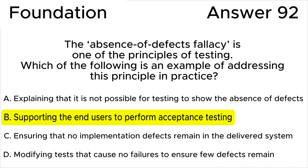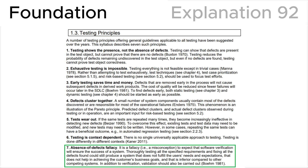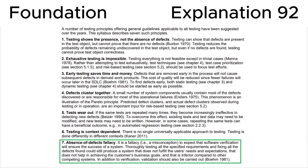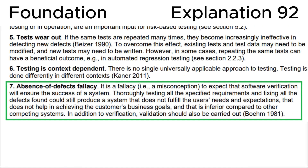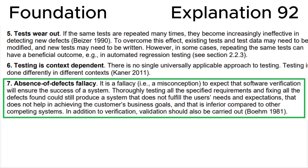My recommendation: please figure out all seven principles with examples and don't mix them up. Finally, let's look at section 1.3 'Testing Principles' in the ISTQB syllabus, where we can see that testing principle seven is the absence of defects fallacy.